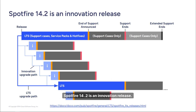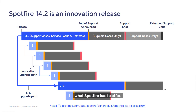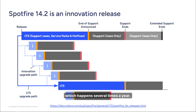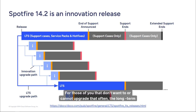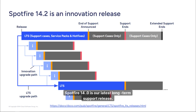Spotfire 14.2 is an innovation release — we used to call these mainstream but thought it more accurate to call them innovation releases for those who want the latest and greatest Spotfire has to offer. Innovation releases are supported until the next innovation release, which happens several times a year. For those who don't want to or cannot upgrade that often, long-term support releases are still the way to go. Spotfire 14.0 is our latest long-term support release.